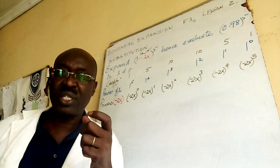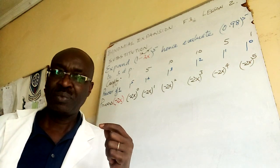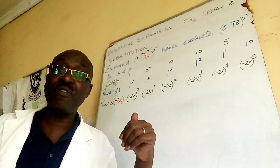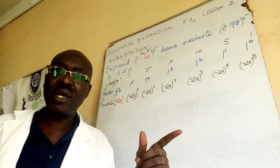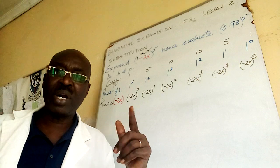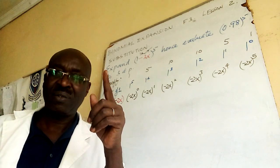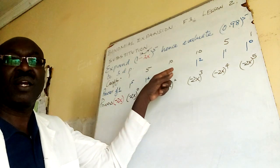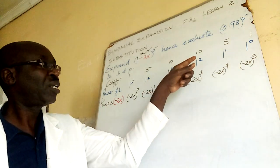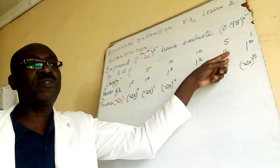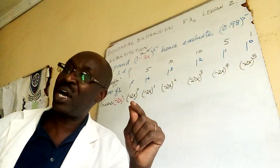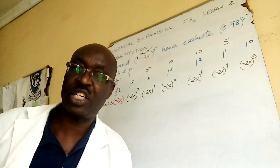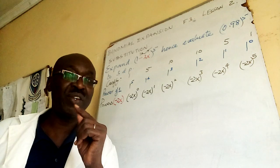I want you to note something here: the powers of the first term decrease from highest to lowest. So if in my question it was 1 minus 2x bracket to power 8, then it would have been 8, 7, 6, 5, 4, and so on. And remember when the power is very big, they give you a limit of expansion.